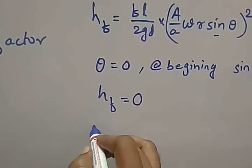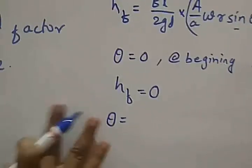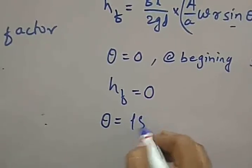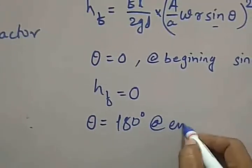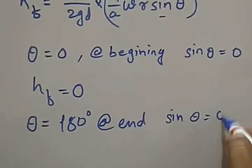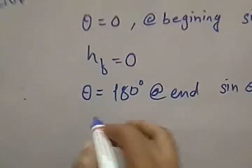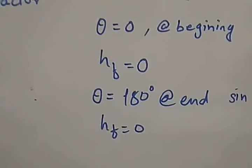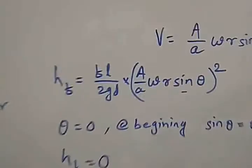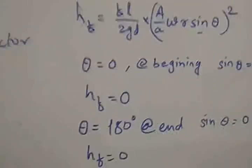At the end, θ is equal to 180 degrees. In this case, sinθ is equal to 0 again, so at the end, HF value is also equal to 0. Because if sinθ is equal to 0, the entire equation becomes 0, so the head of friction will be equal to 0.